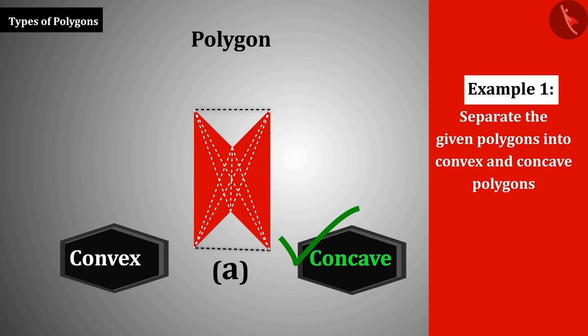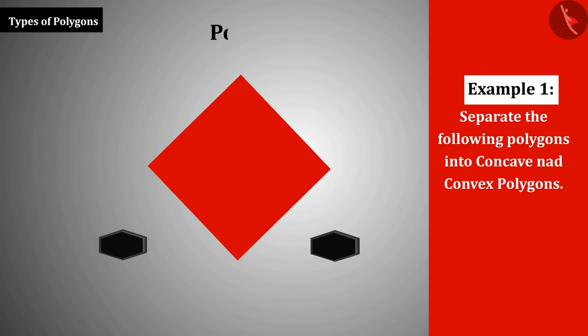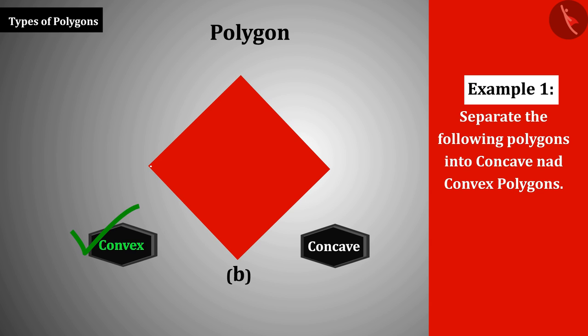we see that the diagonals are located in the exterior of the polygon. Polygon B is convex because all the diagonals of this polygon are located in its interior.